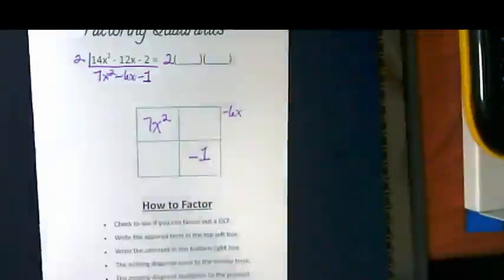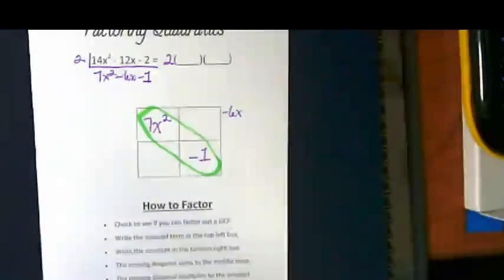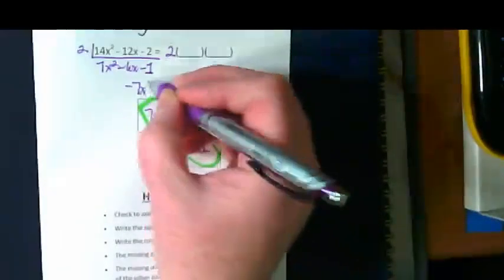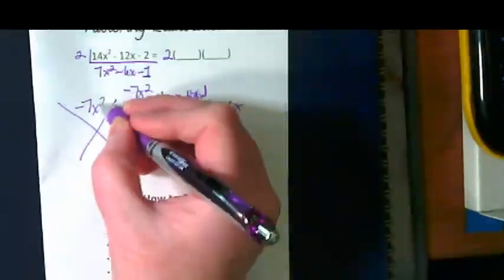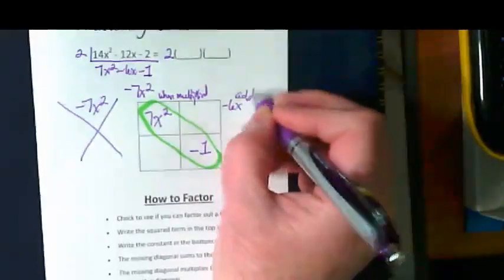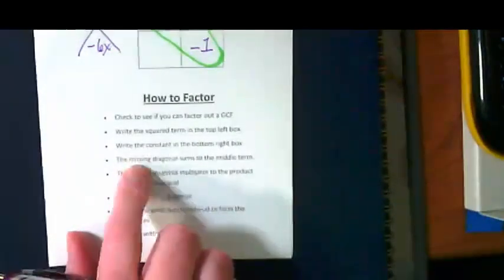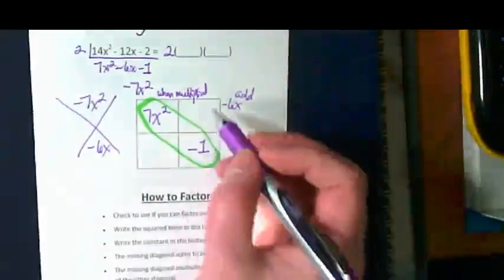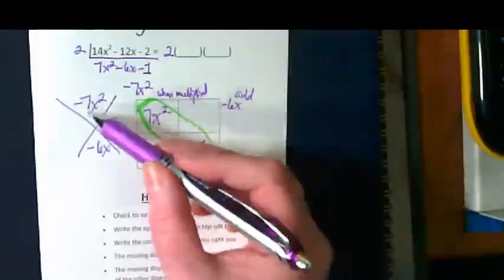And the other thing for us to think about that's a new part of using our puzzles and our boxes in our x puzzle is these two things we're going to multiply and show that multiplied together, those would be negative 7x squared. So when we multiply, we're getting what's going to go on the top of the x puzzle. When we add or combine like terms, we're getting what goes in the bottom of the x puzzle. And this is really what we're doing with this fourth bullet here. The missing diagonal sums to the middle term. These two boxes, we have to have something that equals negative 6x when we add them. But the same two things when we multiply them would give us negative 7x squared.